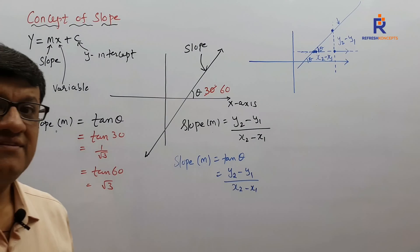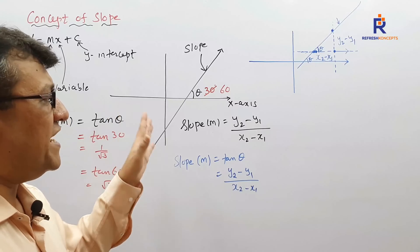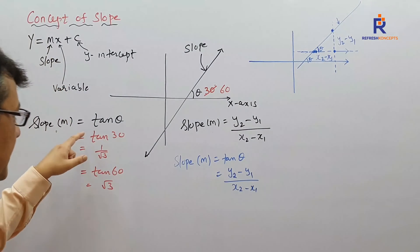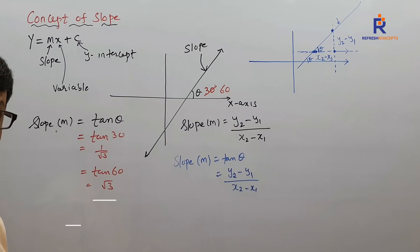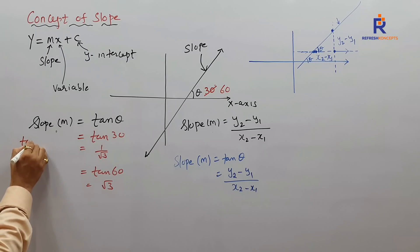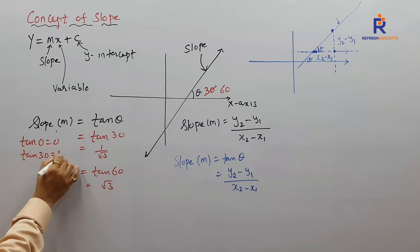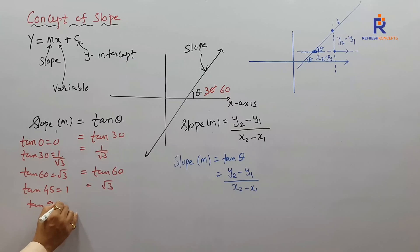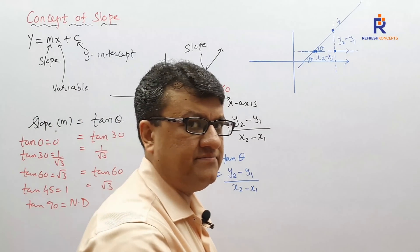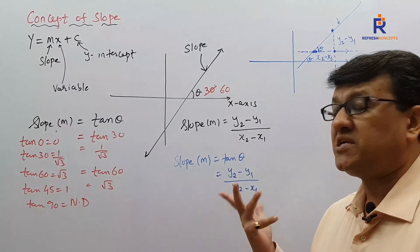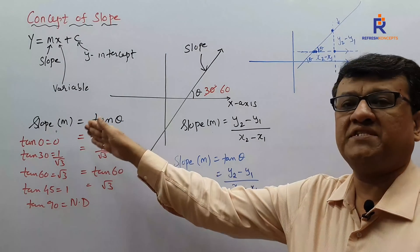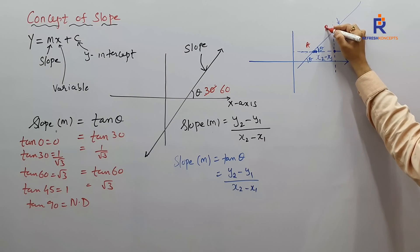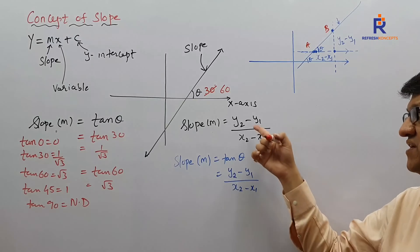So we have two formulas for slope: slope = tan θ, and slope = (y2 − y1)/(x2 − x1). When to use which? Very simple: if theta is given — standard angles 0, 30, 45, 60, 90 — use tan θ. Remember: tan 0 = 0, tan 30 = 1/√3, tan 60 = √3, tan 45 = 1, tan 90 = not defined. If coordinates of two points are given, use (y2 − y1)/(x2 − x1).